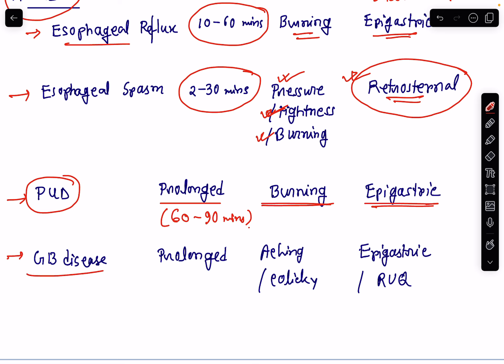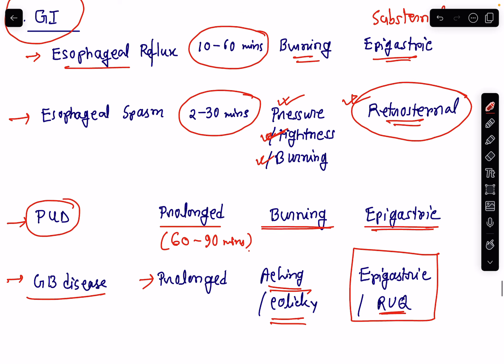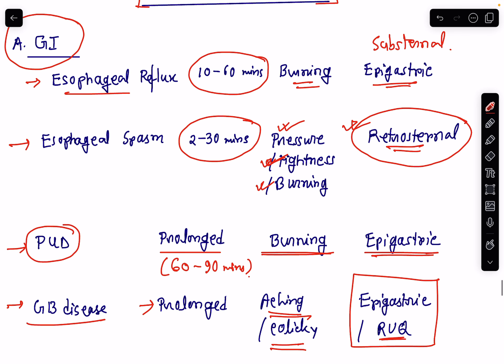Next is gallbladder disease — most commonly cholecystitis — which may lead to pain. The pain duration is usually prolonged. It is aching or colicky type of pain, usually felt in the epigastric region, substernal region, or in the right upper quadrant of the abdomen. These are the characteristics of gastrointestinal causes of chest pain: esophageal reflux, esophageal spasm, peptic ulcer disease, and gallbladder disease.